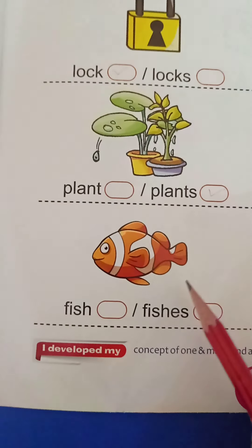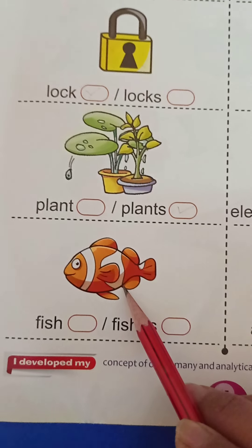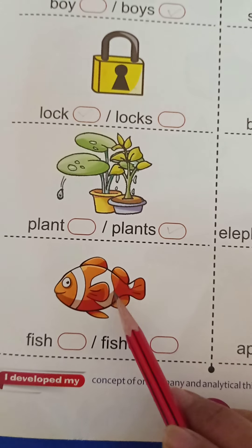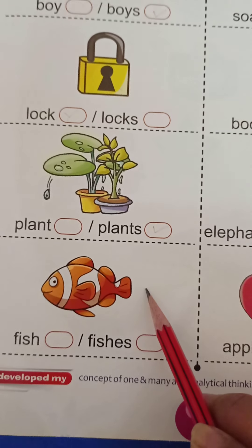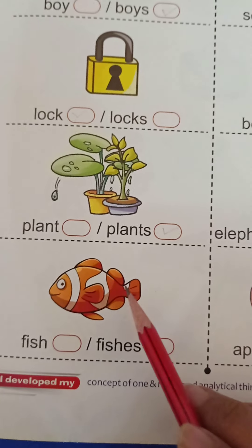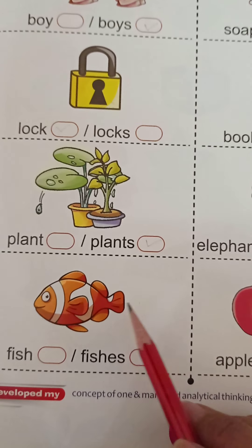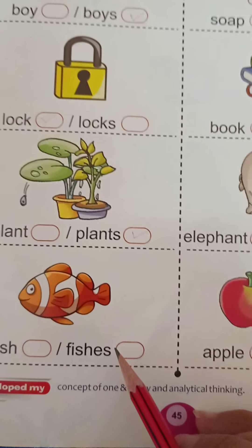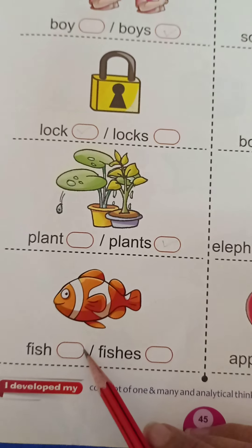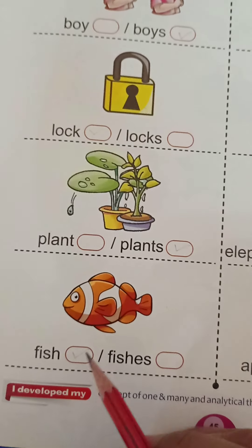How many fish? Only one. Yes. Or if there were more than one, what would we call them? Fishes. If there is more than one, we would say fishes. But here is only one fish. Yes. So tick right here.